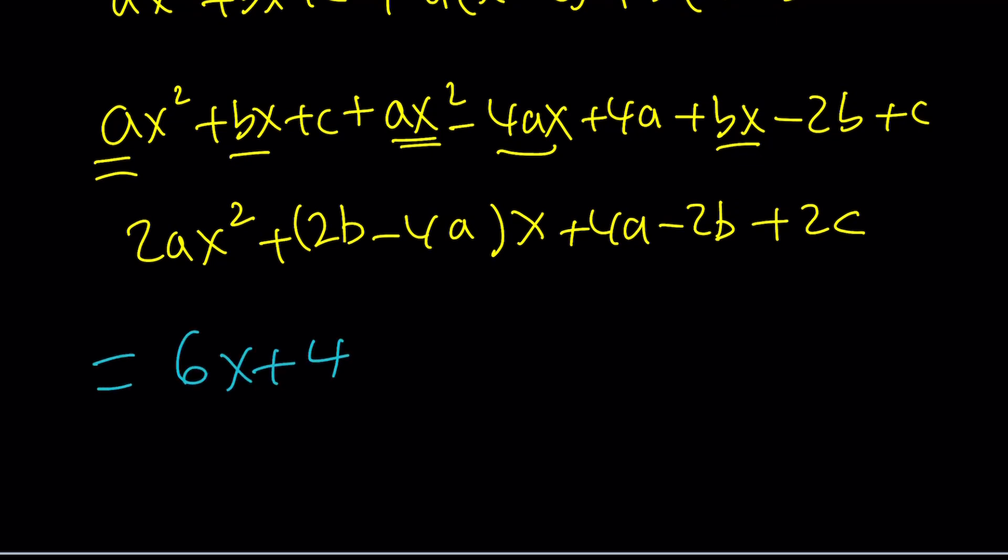Wait a minute, there is no x². Because the coefficient of x² is 0. The coefficient of x is 6 as before. And this is supposed to be 4. Of course, a is 0. Plug it in. You're going to find b and c. Which means this can't be quadratic.